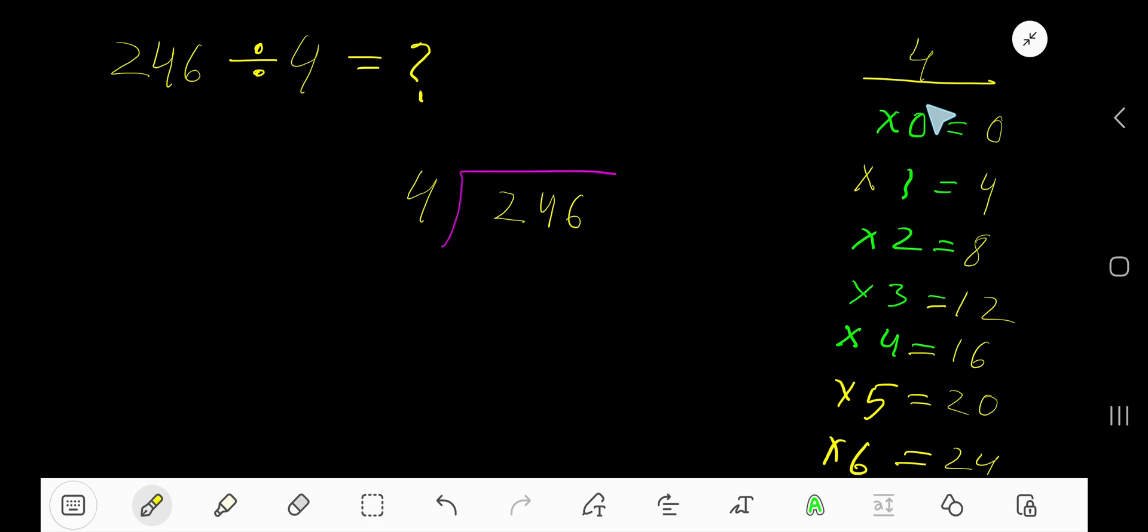To find the multiplication table of 4, just add 4 to the previous step: 0 plus 4 is 4, 4 plus 4 is 8, 8 plus 4 is 12, 12 plus 4 is 16, 16 plus 4 is 20.